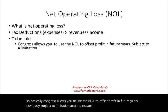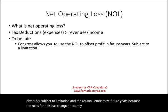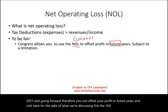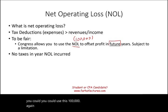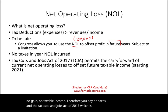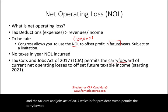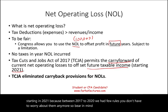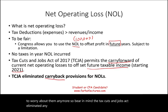The reason I emphasize future years is because the rules for NOL have changed recently a few times, but now we're dealing with 2021 and going forward. Therefore, you can offset your profit in future years. And the Tax Cuts and Jobs Act of 2017 permits the carry forward of the net operating loss to offset future taxable income. Starting in 2021 — because between 2017 to 2020 we had a few different rules — the Tax Cuts and Jobs Act eliminated any carryback provisions. So be careful on the CPA exam: there is no carryback provision starting 2021.